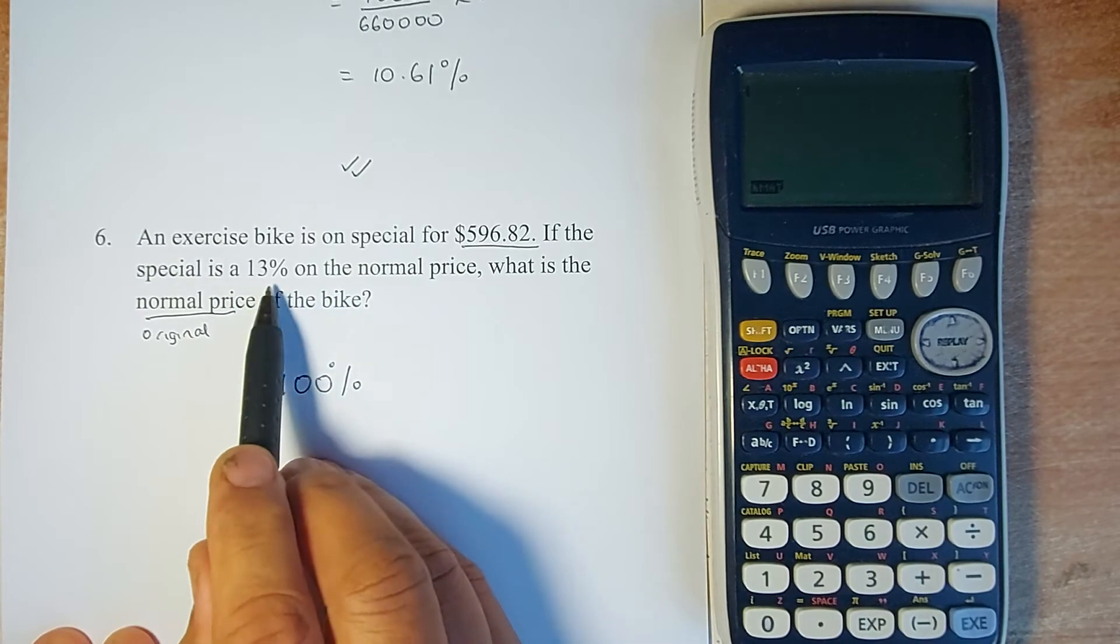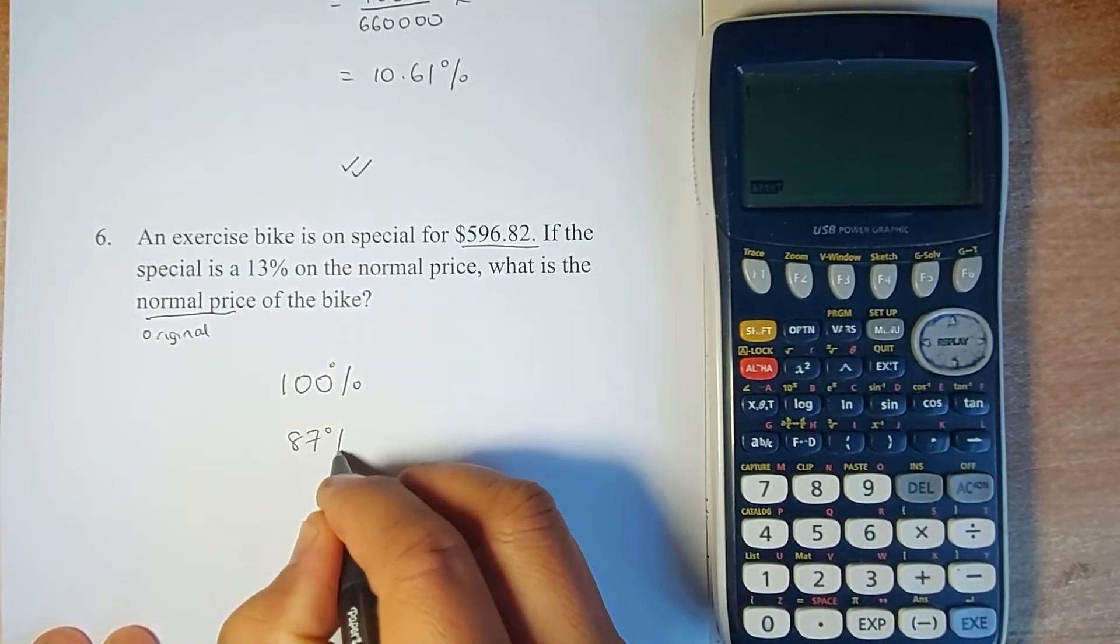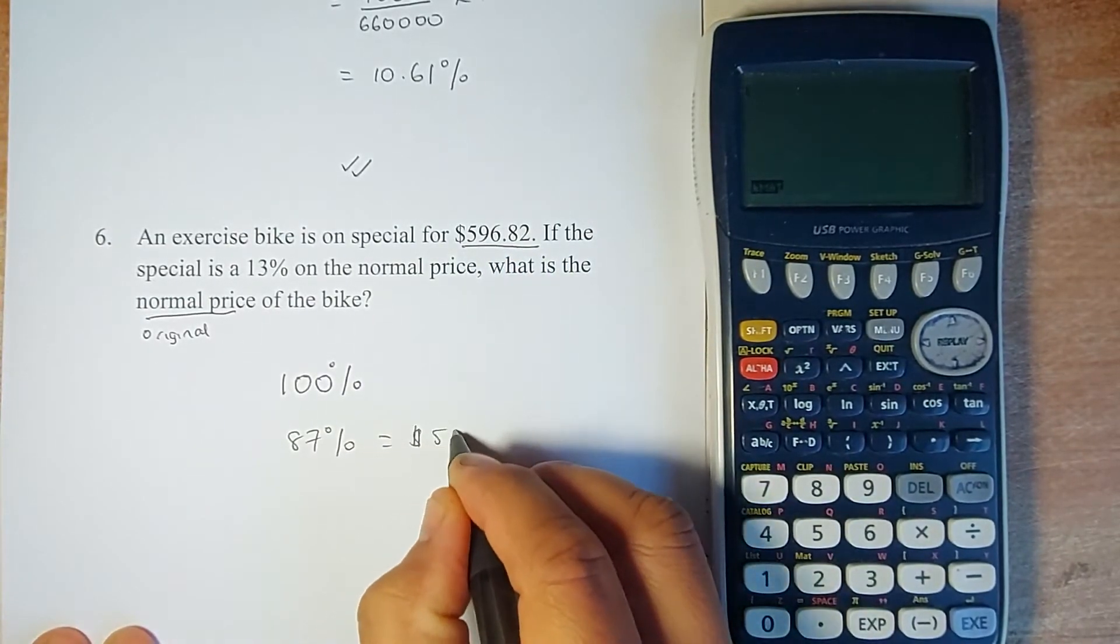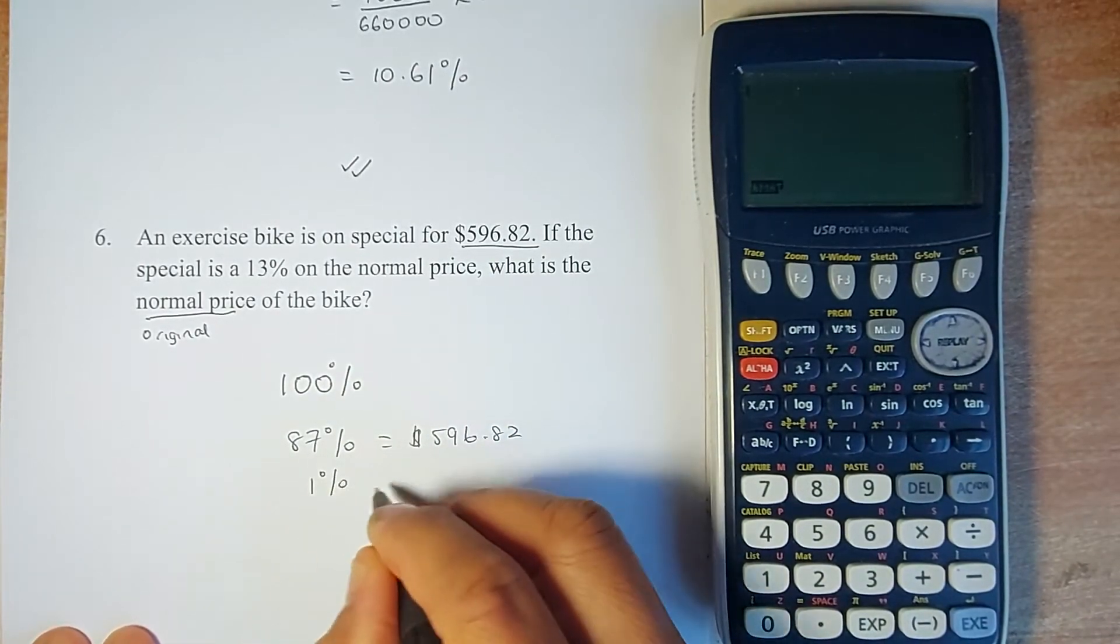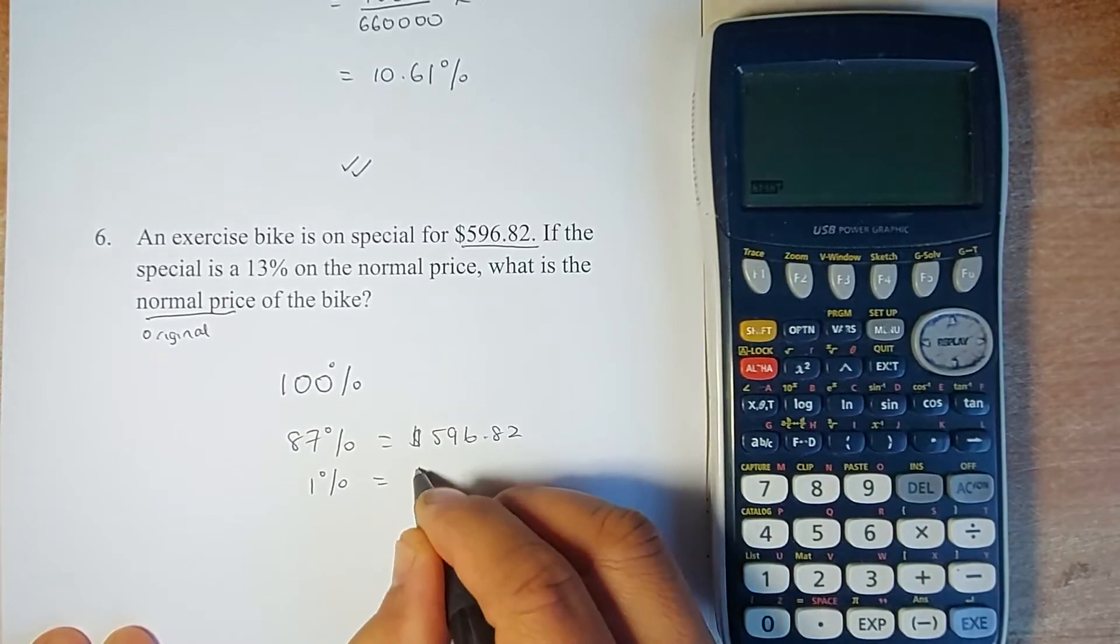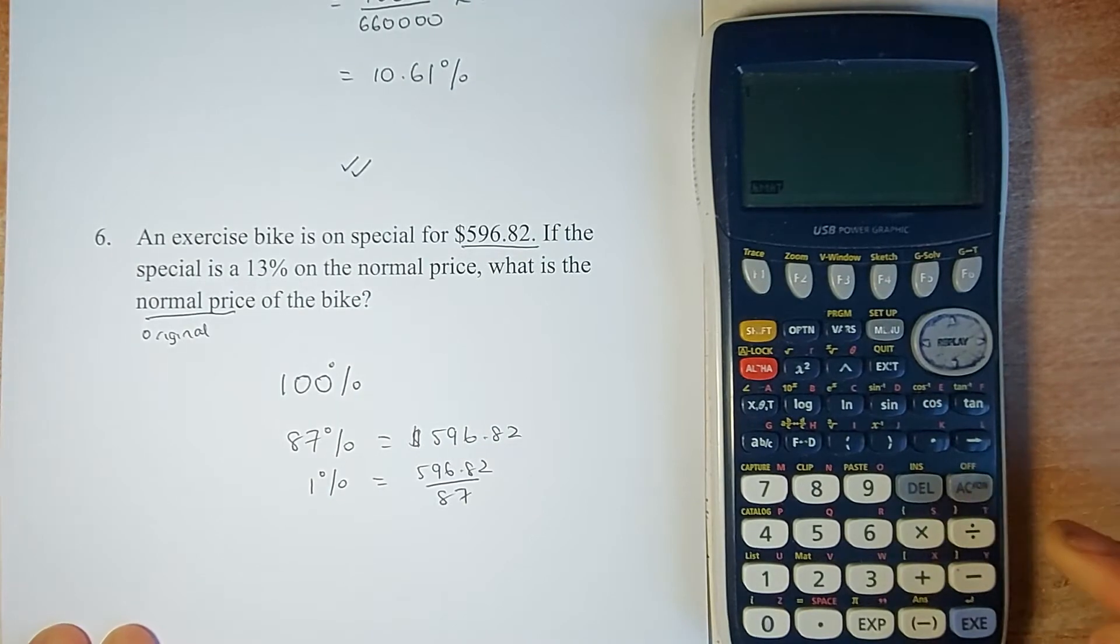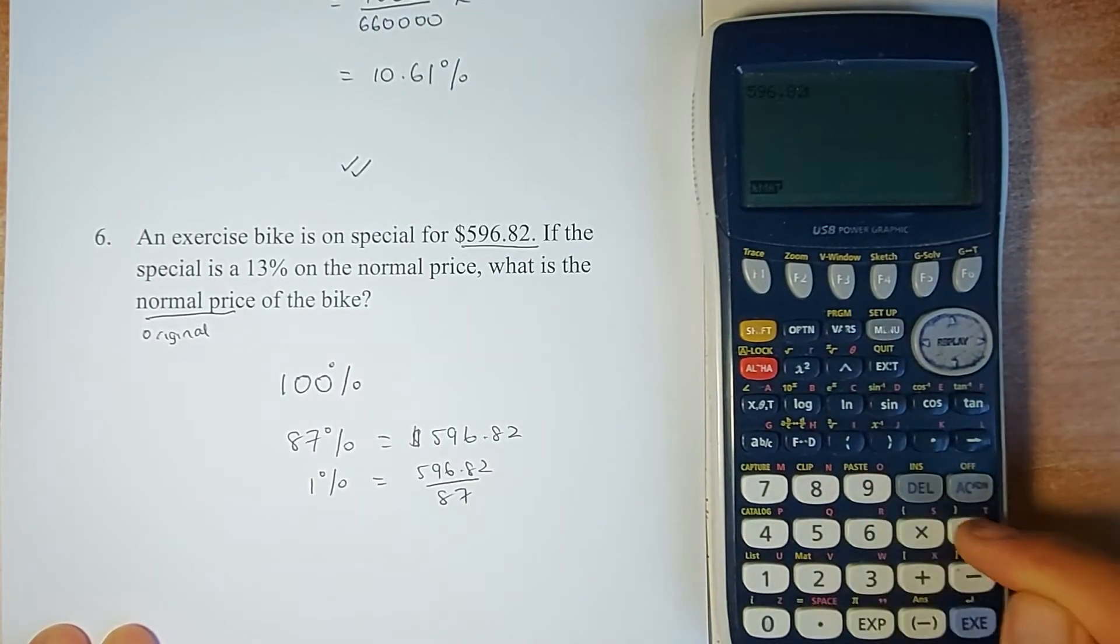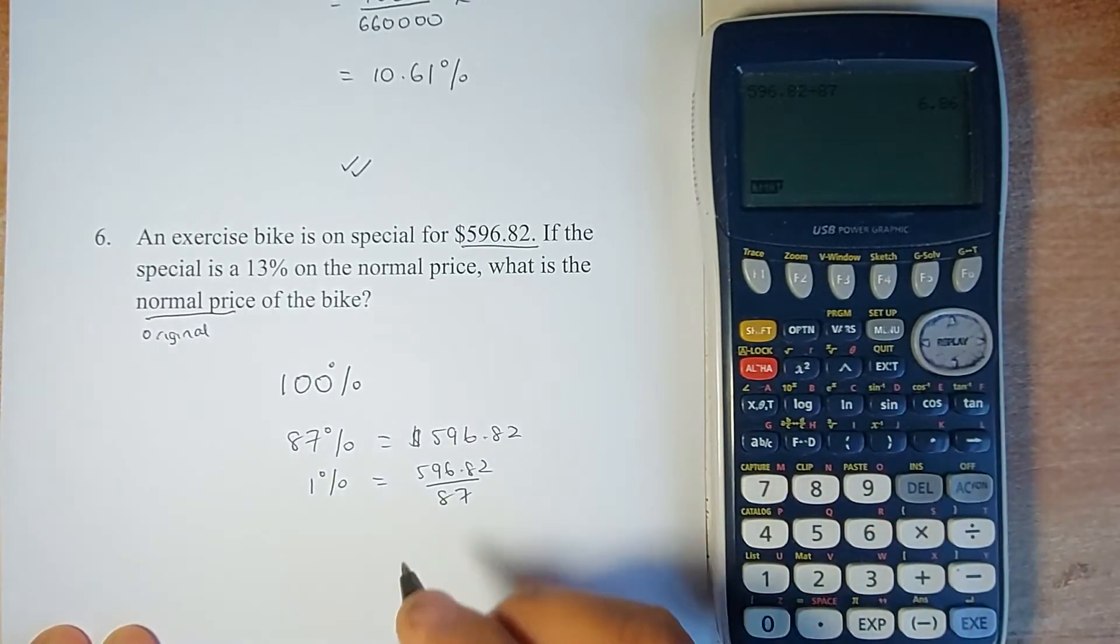If he bought the bike at a 13% discount, he bought the bike at 87%. 87% is the price he bought, so that's $596.82. Now you need to find 1%. To find 1%, you take $596.82 and divide by 87. Put in your calculator: $596.82 divided by 87, and the answer is $6.86.